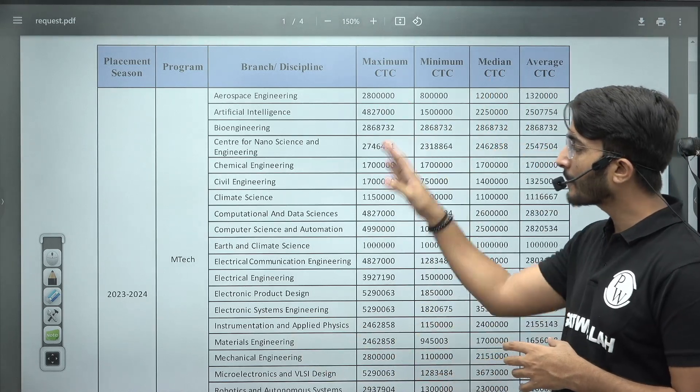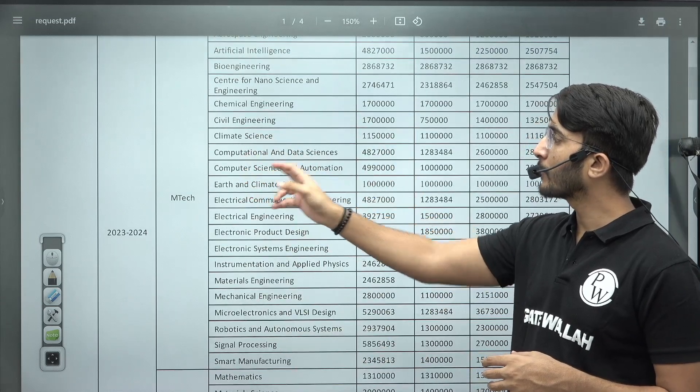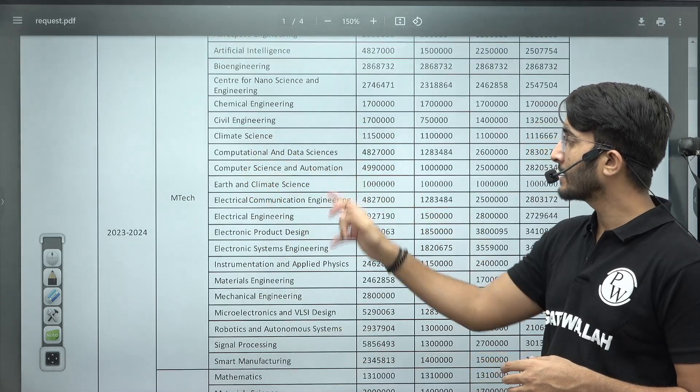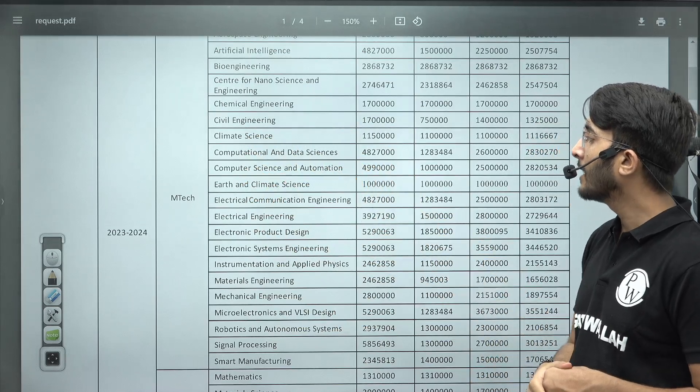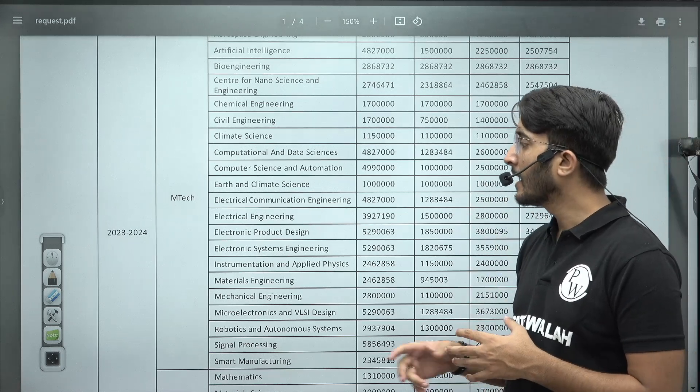Similarly, you can observe guys, there are many M.Tech courses available like Chemical, Civil, Climate, Computational Data Science, Computer Science and Engineering - almost 50 lakh something maximum package, 10 lakh something minimum package, and 28 lakh something average package.